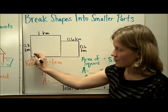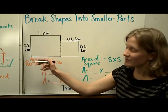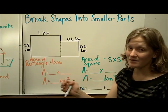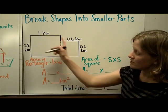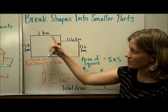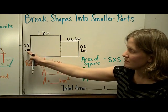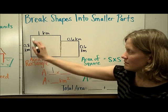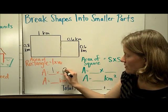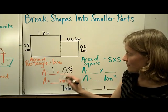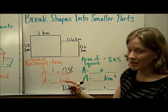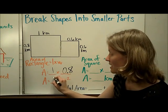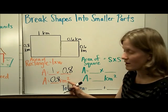So this shape is a rectangle, it might look close to a square, but it's not a square because the sides are not exactly equal. So in order to find the area of this rectangle, I just need to multiply the length times the width. 1 kilometer is the length, and 0.8 kilometers is the width, and then 1 times 0.8 is just going to be 0.8 kilometers squared.